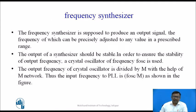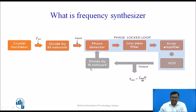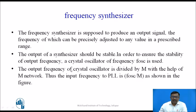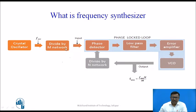The frequency synthesizer produces an output signal whose frequency can be precisely adjusted to any value in a prescribed range. This prescribed range is set by the divide-by-N network by changing N from 1 to N. The output of a frequency synthesizer must be stable, so a crystal oscillator of frequency F_oscillator is used. A crystal oscillator is necessary to provide a stable input frequency, because if the input varies, the output may also change.